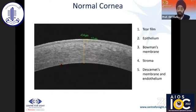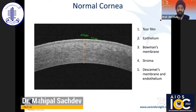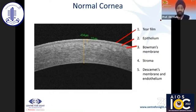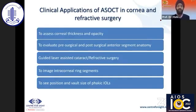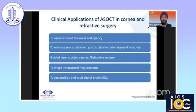When you look at the normal cornea on OCT — OCT actually came in more as an application for posterior segment — but more and more anterior segment surgeons are using it now. You can look at the tear film, the epithelium, epithelial thickness, Bowman's layer, the stroma, and obviously Descemet's and the endothelium. In refractive surgery, cataract surgery, and glaucoma, it helps you get a clue as to the pathology and changes that are happening.